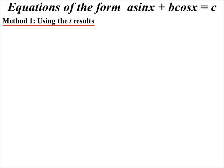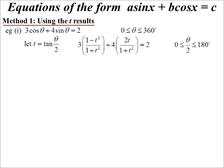We're going to look at two different techniques. The first way is to use the t results that we looked at a few days ago. Here's an example: 3 cos theta plus 4 sine theta equals 2, we want answers between 0 and 360. If I let t equal tan theta over 2, I can use my t results. The equation becomes 3 times (1 minus t squared) over (1 plus t squared) plus 4 times 2t over (1 plus t squared) equals 2.